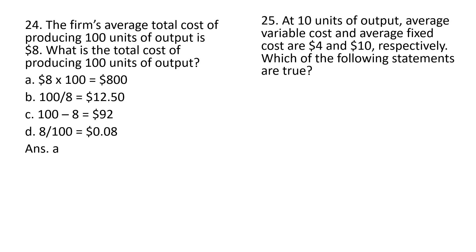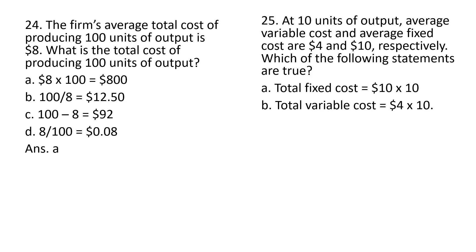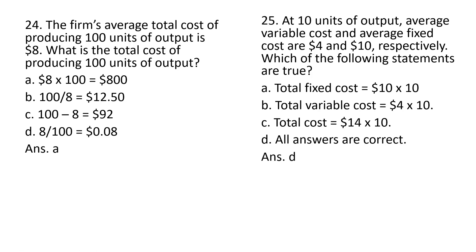Question 25: at 10 units of output, average variable cost is $4 and average fixed cost is $10. Total fixed cost is 10 times 10 — that is correct; total fixed cost equals average fixed cost times quantity. Answer choice B is correct: total variable cost is $4 times the quantity of output. Answer choice C is also correct: total cost is average total cost, which is $4 plus $10, multiplied by the quantity of output, giving $140. So all answers are correct.